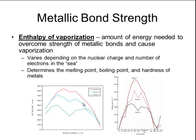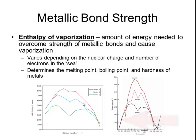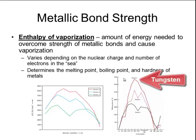The two graphs look almost alike. So if a substance has a lower enthalpy of vaporization, it will also have a lower melting point, lower boiling point, and will be a softer metal. Whereas if a metal has a high enthalpy of vaporization, it will also have a high melting point, high boiling point, and be very hard. For example, the peak of the red line is tungsten, which is a very popular metal to use as the filament in incandescent light bulbs, because the filament won't melt as the light bulb gets very hot.